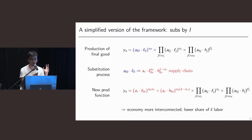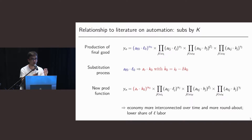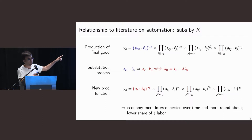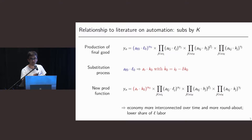Let me compare this to the usual automation framework that David, Daron, and many others have introduced. In that framework, we have capital as well — some tasks produced by capital — where task zero is substituted not by an intermediate but by a capital good: equipment, software, an algorithm, and so on. As this substitution takes place, capital produces more tasks and low-skill labor produces fewer. When you think about capital, it's essentially a fixed cost incurred in the past to use the robots today. In some sense, the economy is also becoming more interconnected over time, not necessarily over space. And it's also becoming more roundabout because capital is produced from final goods today.